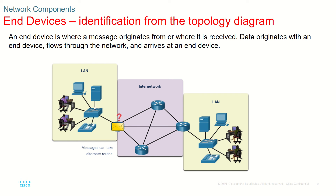A message can go from the end device to the switch, then to this router, and based on the routing protocols it may be routed through one router or another. Any router it can take, depending on the routing protocols or the configuration available.